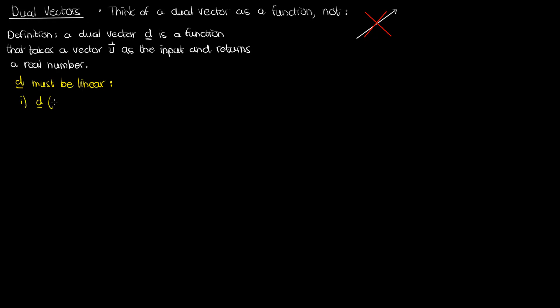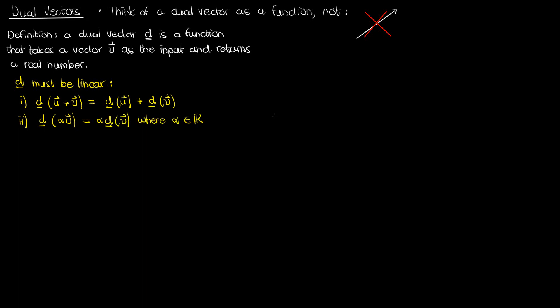So if I input the sum of two vectors u and v into d, the result must equal the sum of d evaluated on each of those two vectors individually: d of u plus v equals d of u plus d of v. The other requirement is that if I input a vector v scaled by a real number alpha, the output should equal alpha times d of v. Both the summation rule and the scaling rule must be satisfied for d to be a dual vector.